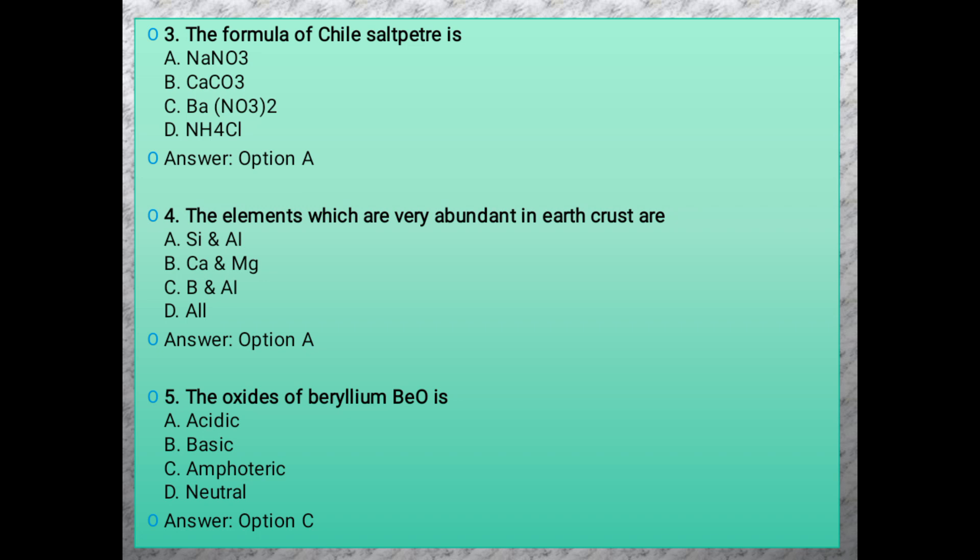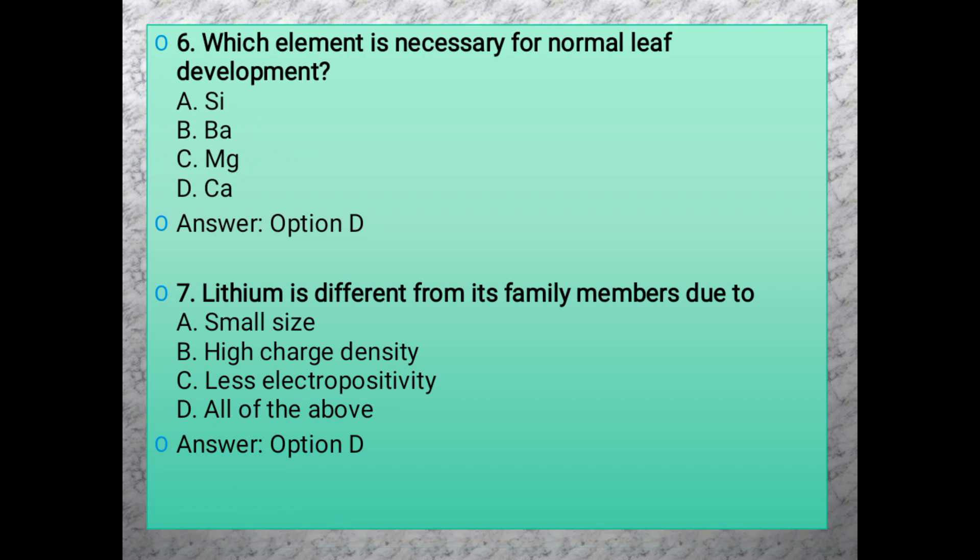Question 6: Which element is necessary for normal leaf development? The answer is calcium, option D. Calcium is essential for both humans and plants. Without calcium, leaves will deteriorate very soon.